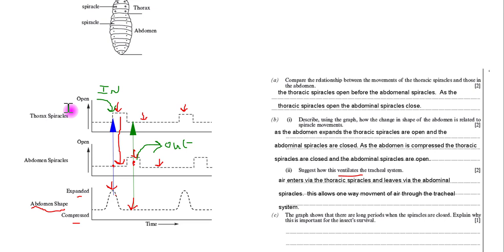The last part, part C, is straightforward and was mentioned earlier. The graph shows there are long periods when the spiracles are closed. This is important for insect survival because the spiracles spend a lot of time closed, which reduces water loss from the insect. That ends this video on gas exchange in insects — hopefully things are making a bit more sense on this topic. Thank you.